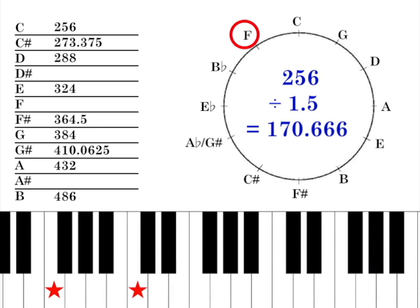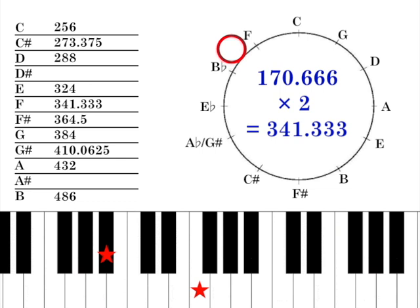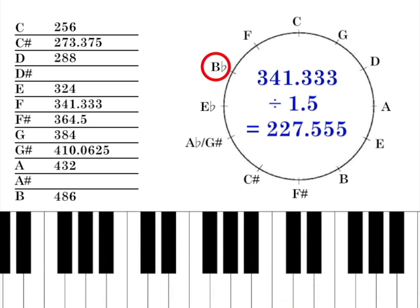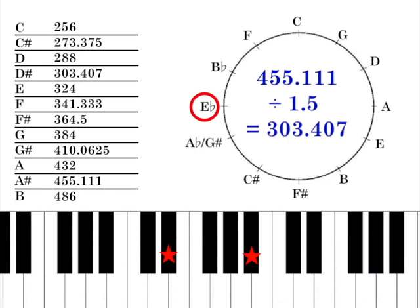Down a fifth from F is B flat, at 227.555 repeating. And up an octave is 455.111 Hz. And our final note is down a fifth from B flat, giving an E flat with a frequency of 303.407 repeating. Great. We now have a chromatic scale, from which we can extrapolate out all the other octaves.